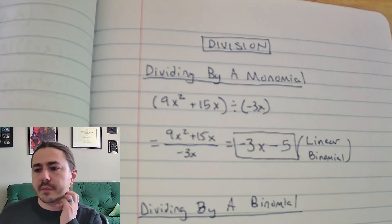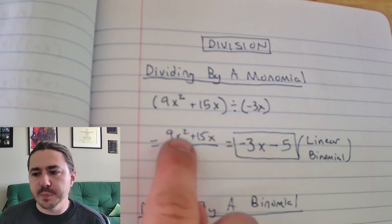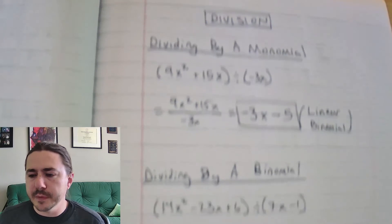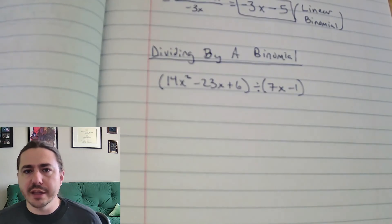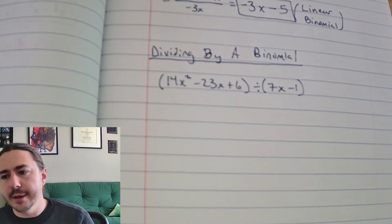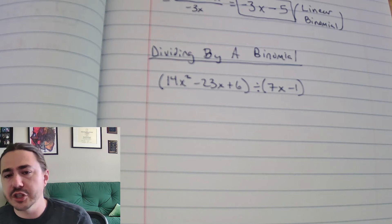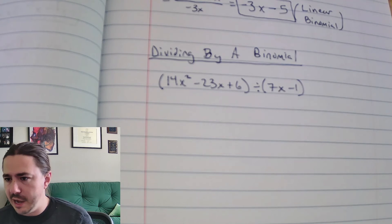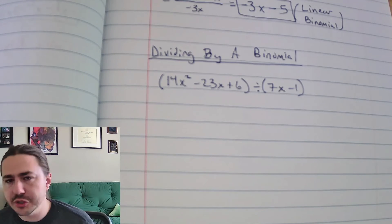When you're dividing by a monomial, that's basically it — you just divide each term by that monomial. When you're dividing by a binomial, this is where you have to do long division. I'll go through that division algorithm, talking through how I end up with my quotient and potentially a remainder.